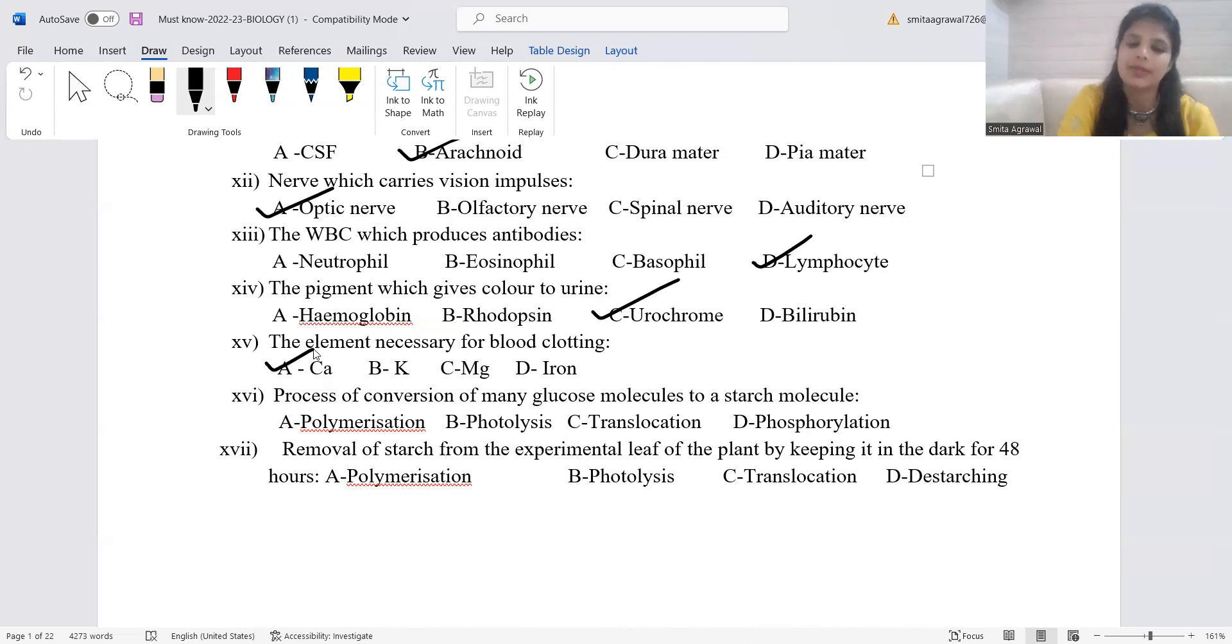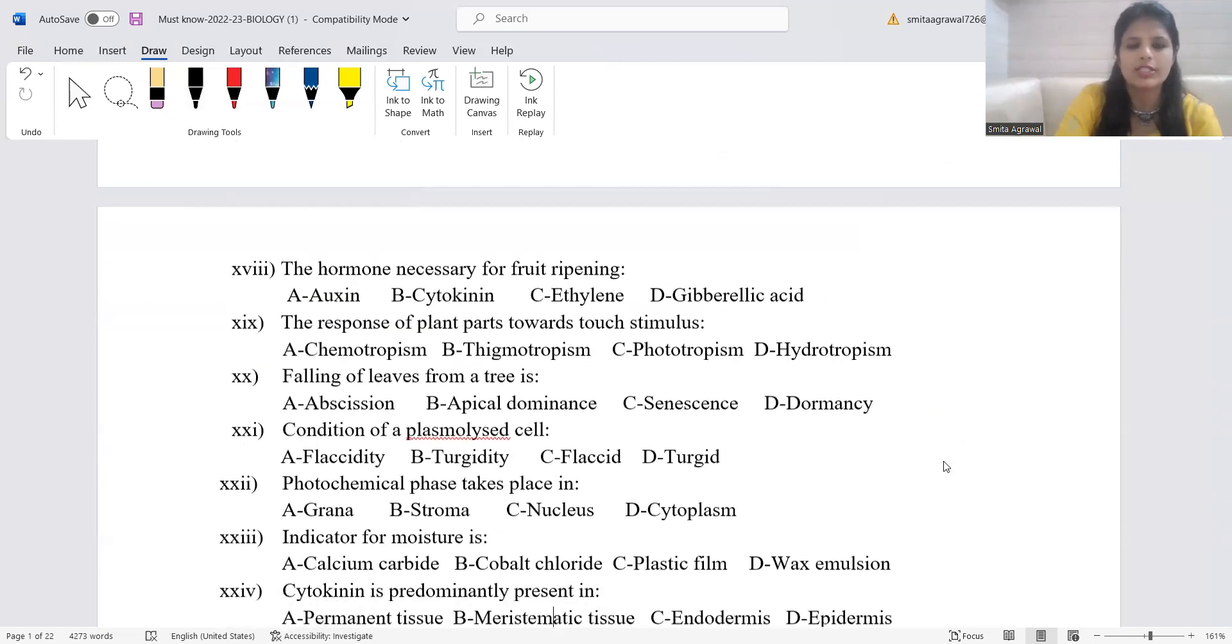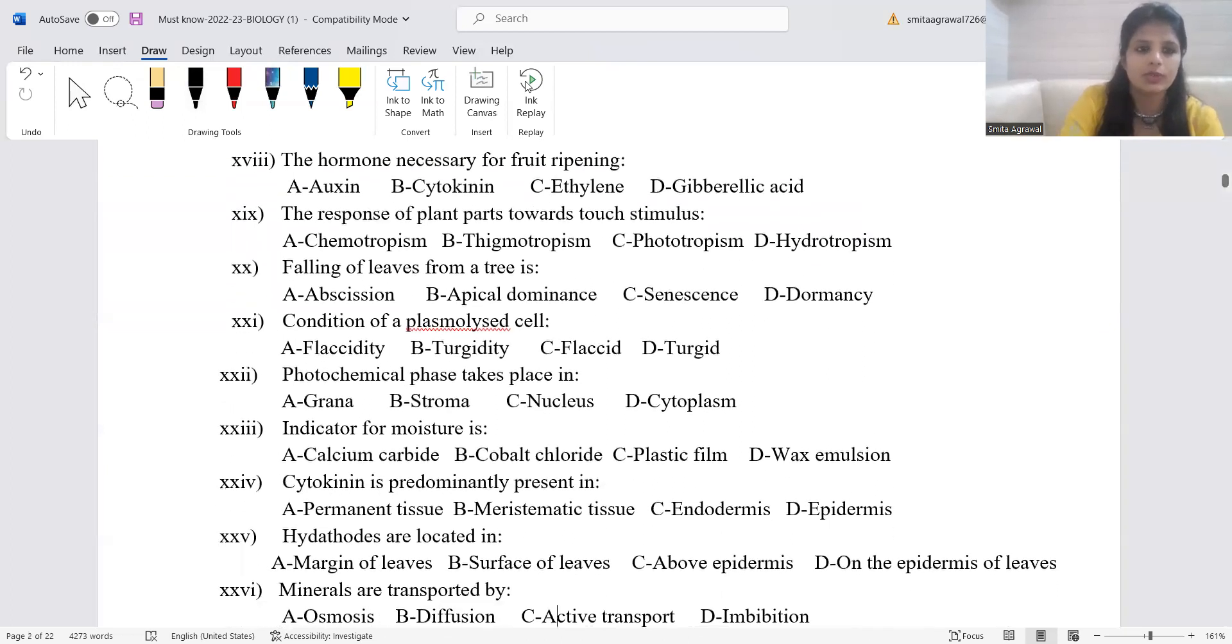The pigment which gives color to urine, the correct answer is urochrome. The element necessary for blood clotting: calcium. Potassium for stomata opening and closing. Magnesium in chlorophyll. Iron in hemoglobin. Process of conversion of many glucose molecules into starch, the correct answer is polymerization. Photolysis: breakdown of water molecule in presence of light. Translocation: transfer of food from the region where it is formed to the area of storage. Photophosphorylation: the conversion of ADP into ATP in presence of light. Removal of starch from the experimental leaf is known as destarching.